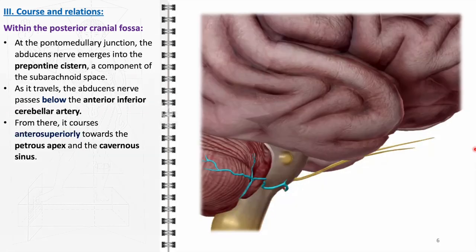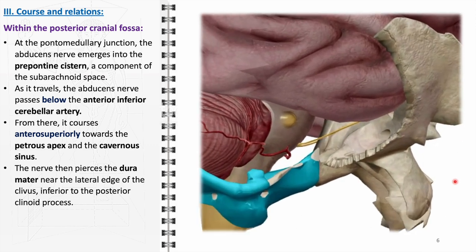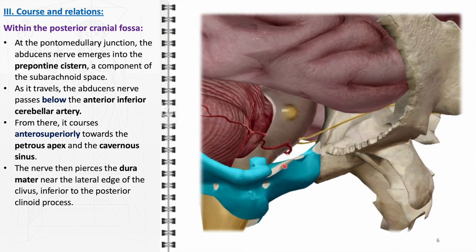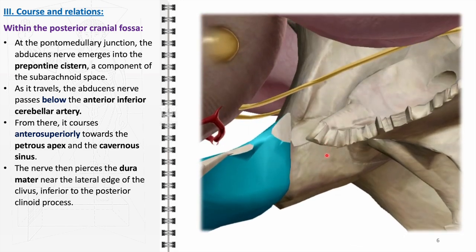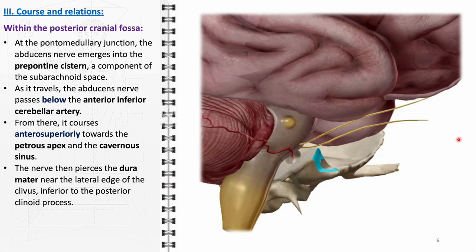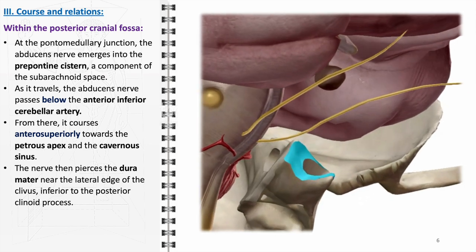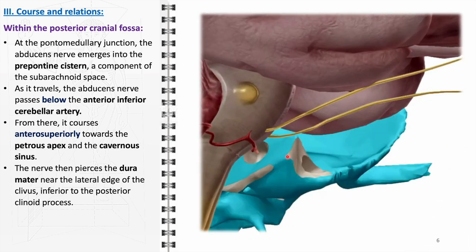From this point, the nerve takes an anterosuperior course towards the petrous apex, a critical juncture in its path. This trajectory towards the petrous apex of the temporal bone is significant as it marks the nerve's transition towards a more vulnerable and confined space. The abducens nerve then encounters a crucial structural barrier, the dura mater. It pierces the dura mater near the lateral edge of the clivus, just inferior to the posterior clinoid process. This penetration is a critical transition from a relatively protected course to one where the nerve becomes more susceptible to external pressures and injuries.